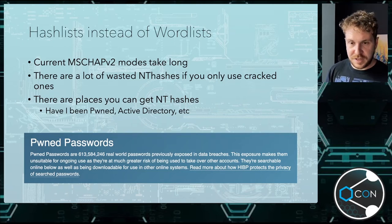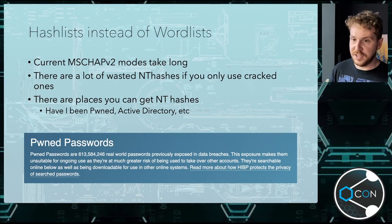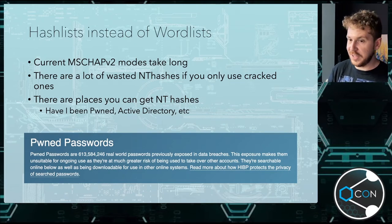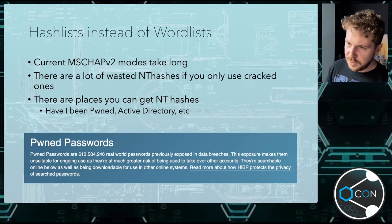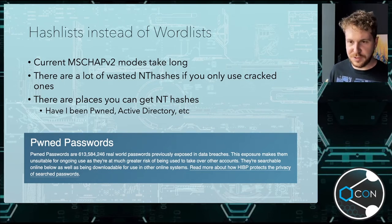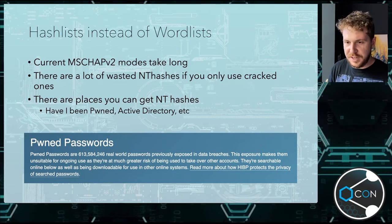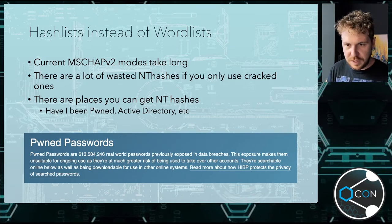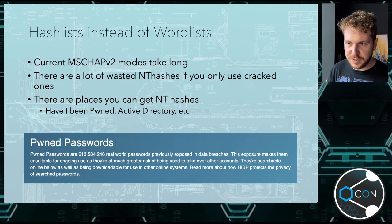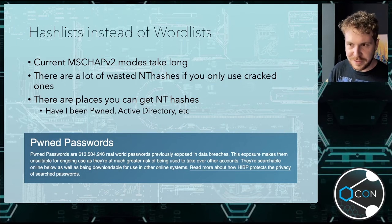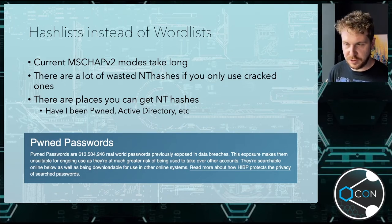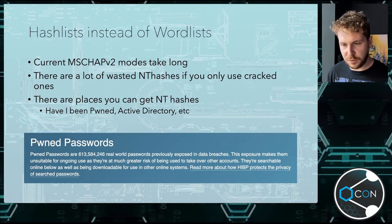So now we can use hash lists instead of word lists. Current MSChap modes take very long and there's a lot of wasted NT hashes if you only use cracked ones. The idea behind this was: why bother cracking when we can get word lists of actual passwords and then just pass the hash? What really intrigued me was Troy Hunt from Have I Been Pwned providing NT hashes - this means we have a really large database of real-world passwords that people may have chosen as their Active Directory passwords. Should we capture an MSChap challenge response, we can use that as a word list to quickly check whether this person has reused a password.